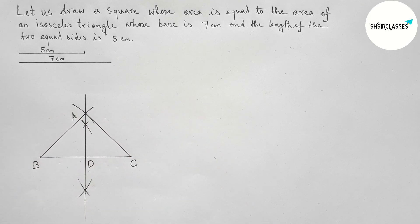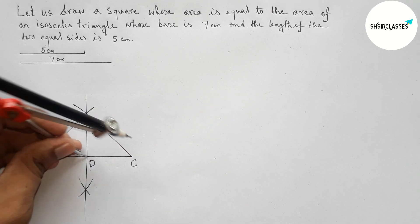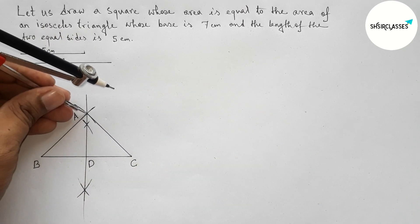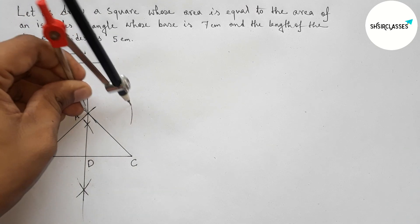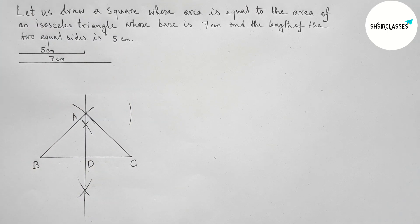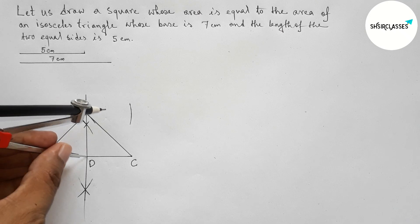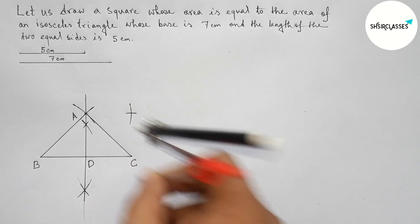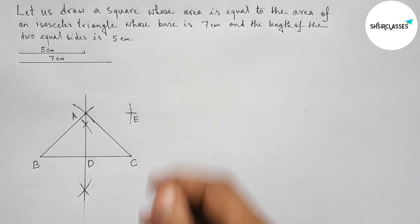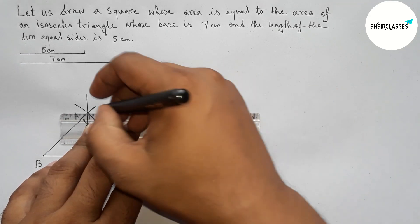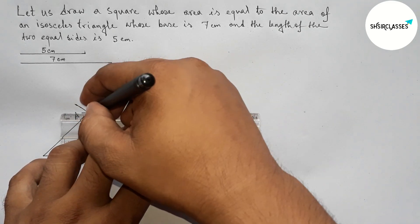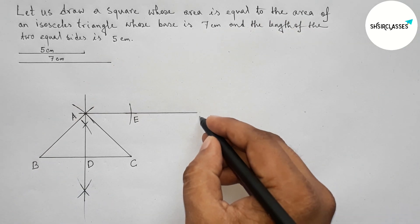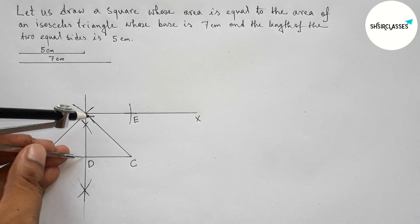Next, drawing a line through point A which is parallel to BC. Taking the length DC with the compass and placing it on point A, drawing an arc. Then taking the length AD with the compass, placing it on point C and cutting — taking that intersection as point E. Joining A and E and extending it. This line is parallel to BC. Taking point X here.